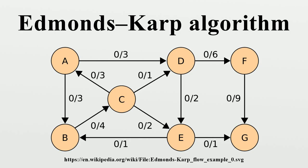The running time of O is found by showing that each augmenting path can be found in O time, that every time at least one of the edges becomes saturated, the distance from the saturated edge to the source along the augmenting path must be longer than last time it was saturated, and that the length is at most V.